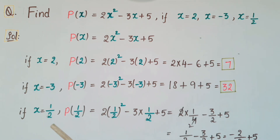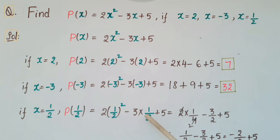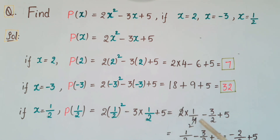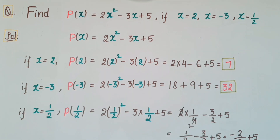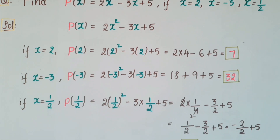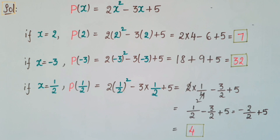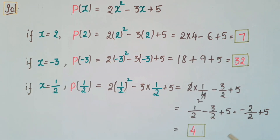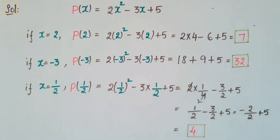Next, if x is equal to 1/2, then p(1/2) = 2 × (1/2)² - 3 × (1/2) + 5, that is 2 × (1/4) - 3/2 + 5. Calculating this value, the result will be 4. So this is the value of the polynomial when x is equal to 1/2.